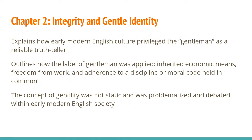Chapter 2 begins the explanation of how early modern English culture privileged the gentleman as a reliable truth-teller. Shapin outlines how the label of gentleman was applied and what factors played into that application, including inherited economic means, freedom from work, and adherence to a discipline or moral code held in common. The concept of gentility was not static and was problematized and debated within early modern English society, so there was not universal agreement about who a gentleman was or what he did.